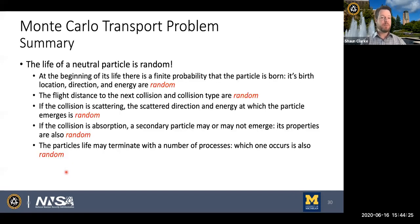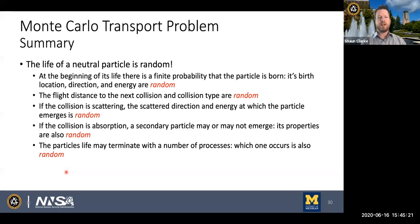In summary, the life of neutrons or photons is random. At the beginning of the particle's life, there's a probability it's born with any certain properties — location, direction, energy — all random. Flight distance between collisions is random. If the particle scatters, the new direction of travel is random. Any secondary particles produced through absorption, fission, or otherwise are also random. Ultimately, the process by which the random walk ends — absorption, transmission, reflection — is all random. Through knowledge of the physical laws governing these processes and random sampling, we can model that random walk using Monte Carlo.